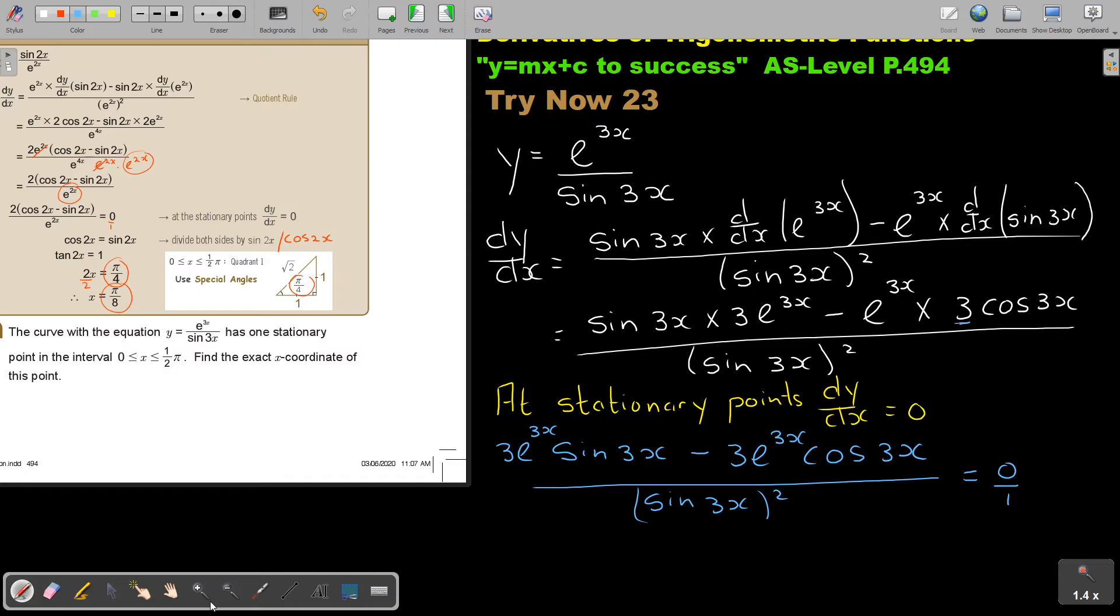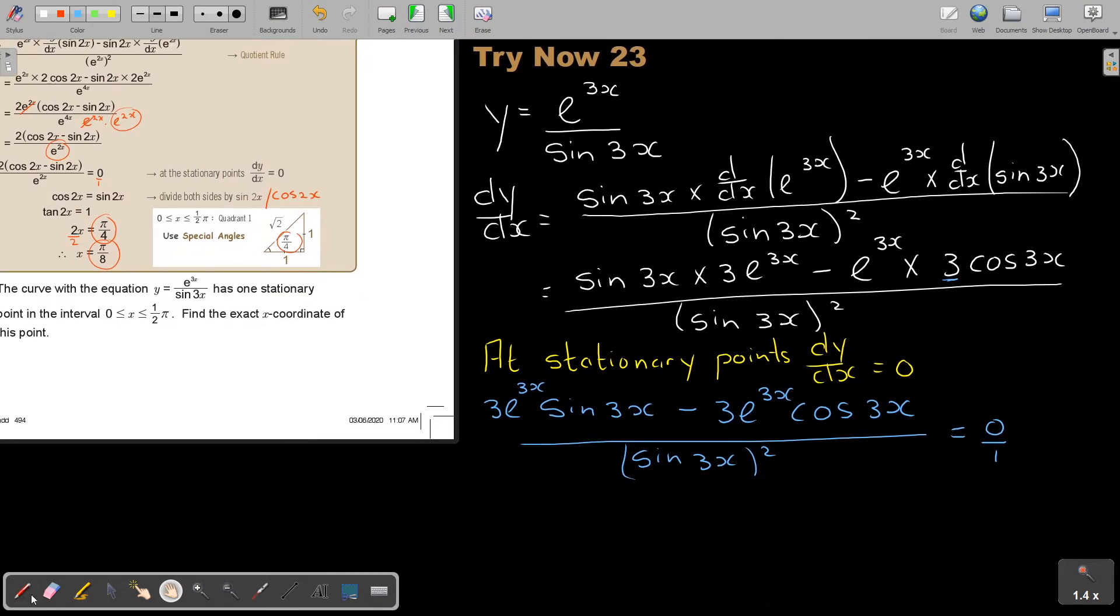And that's equal 0. But don't forget, put it over 1. So if I'm going to cross-multiply, this is going to become 0. I could have taken the common factor out already. But don't forget, if you multiply, 0. So that denominator is becoming 0. Now take out that 3e^3X as a common factor. And then you have sin 3X minus cos 3X. And that's equal to 0.